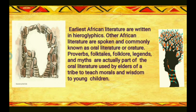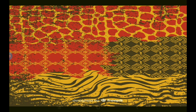The earliest form of African literature in written form makes use of hieroglyphics or hieroglyphs. Other African literature are spoken and commonly known as oral literature or orature. Examples of oral literature are proverbs, folktales, folklore, legends, and myths. This oral literature is used by the elders or seniors of a certain tribe to teach morals and wisdom to the young people or children.